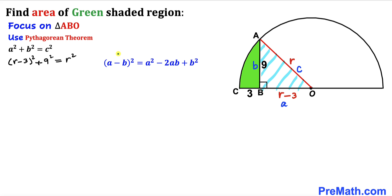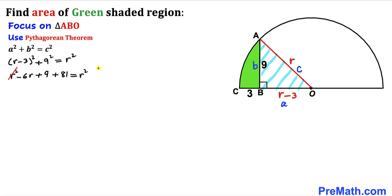Recalling the identity (A minus B)² = A² − 2AB + B², we expand the left side: r squared minus 6r plus 9, plus 81, equals r squared. The r squared terms cancel, and combining like terms gives us negative 6r plus 90 equals 0.